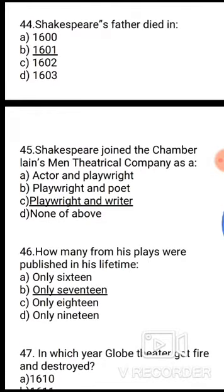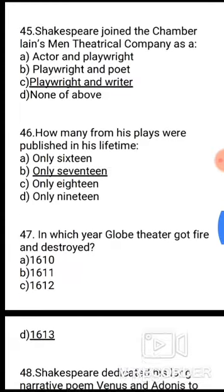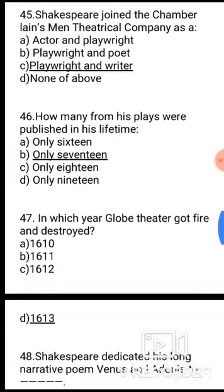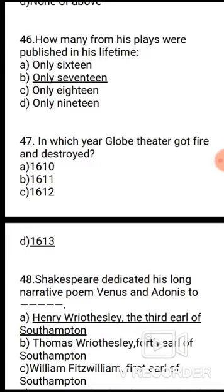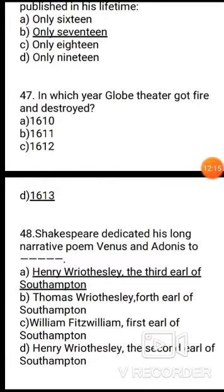Question 45: Shakespeare joined the Chamberlain's Men theatrical company as — the correct answer is option C, playwright and actor. Question 46: How many of his plays were published in his lifetime? The correct answer is option B — only 17 plays were published in his lifetime. Question 47: In which year did the Globe Theatre get fired and destroyed? The correct answer is option D, 1613. Question 48: Shakespeare dedicated his long narrative poem Venus and Adonis to option A, Henry Wriothesley, the third Earl of Southampton.